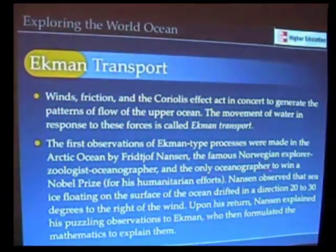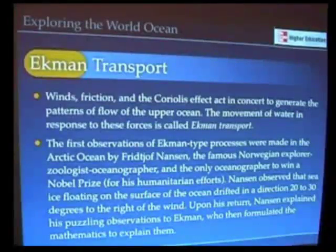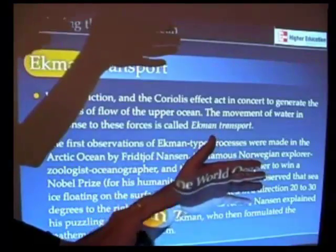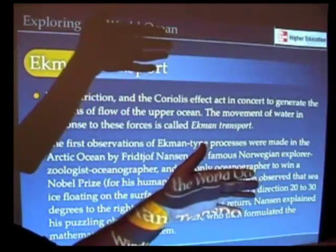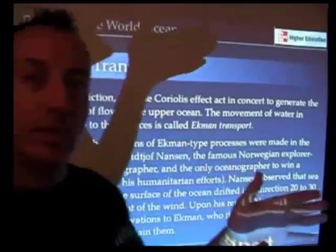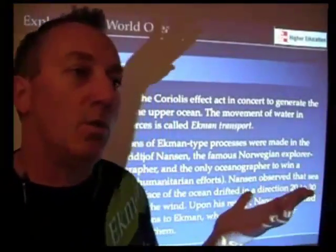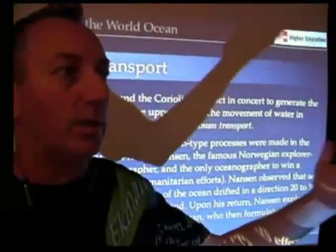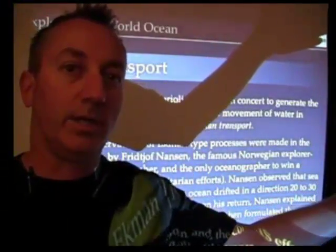And so, aboard his Fram, what Nansen observed was that as the wind was blowing, the ice moved off 20 to 30 degrees in a different direction than the direction of the wind. And he thought that very curious because normally you would think that, of course, that a blowing wind would blow an object in the direction of the wind.